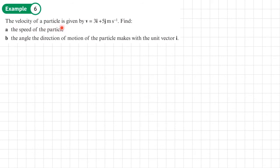Example 6. The velocity of a particle is given by V equals 3i plus 5j. Find the speed of the particle.